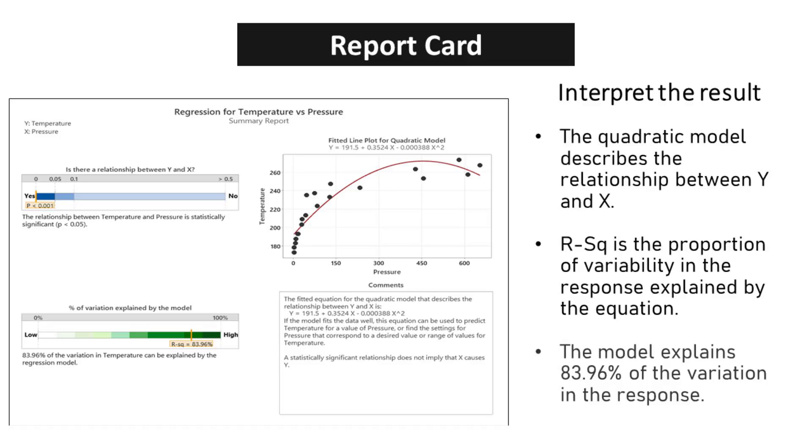This high R-squared value indicates that the quadratic model is a strong and reliable predictor of the relationship between Y and X.